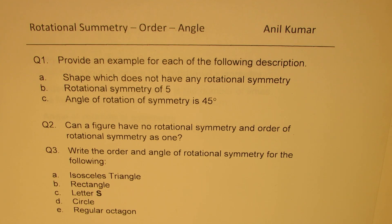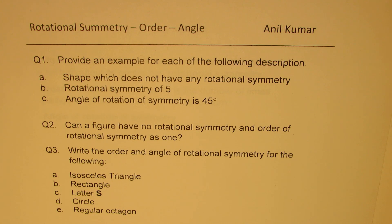Question number one: provide an example for each of the following descriptions. A: a shape which does not have any rotational symmetry. B: rotational symmetry of 5. C: angle of rotation of symmetry is 45 degrees.